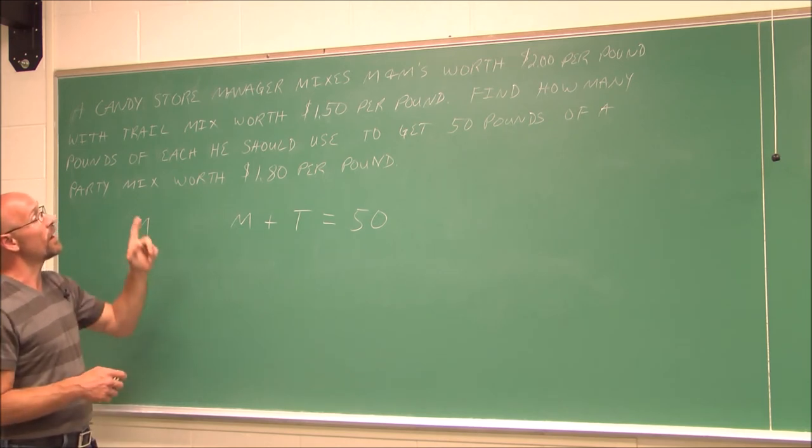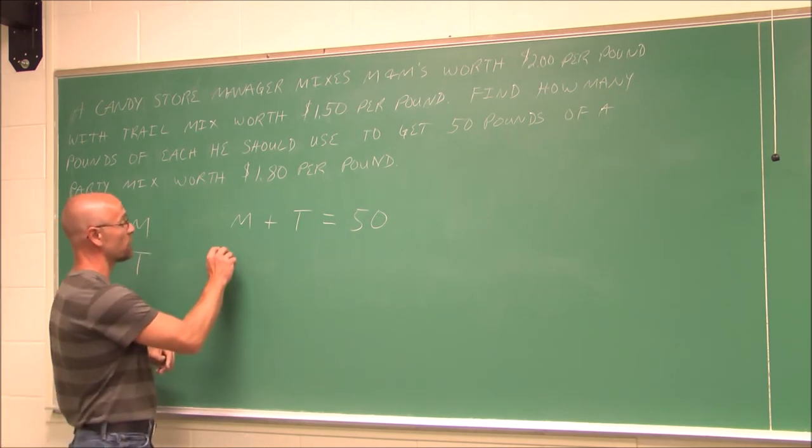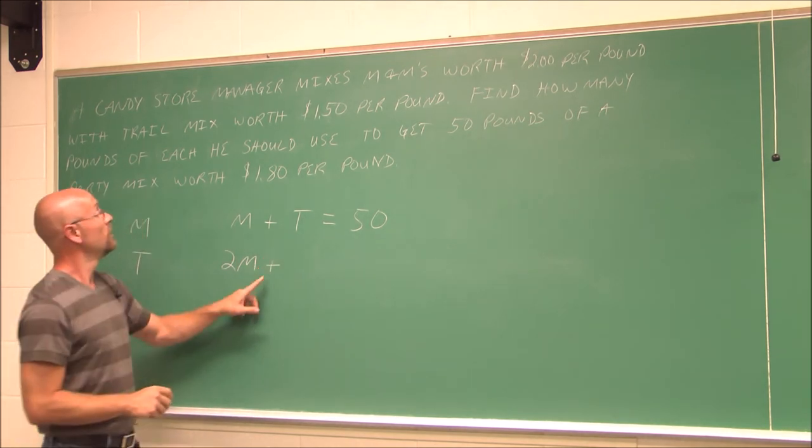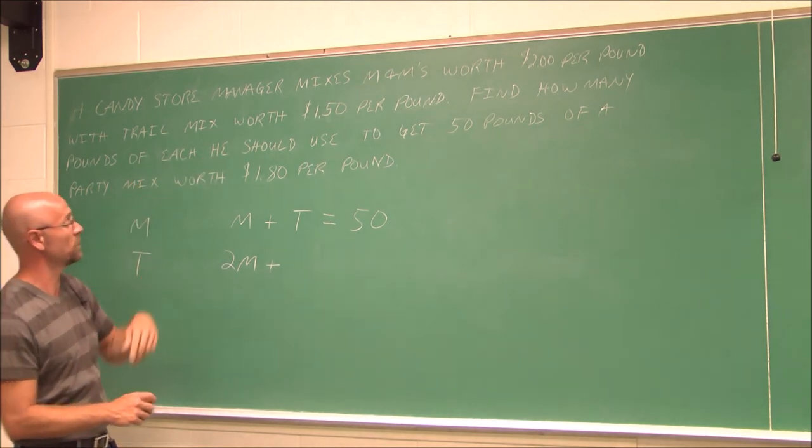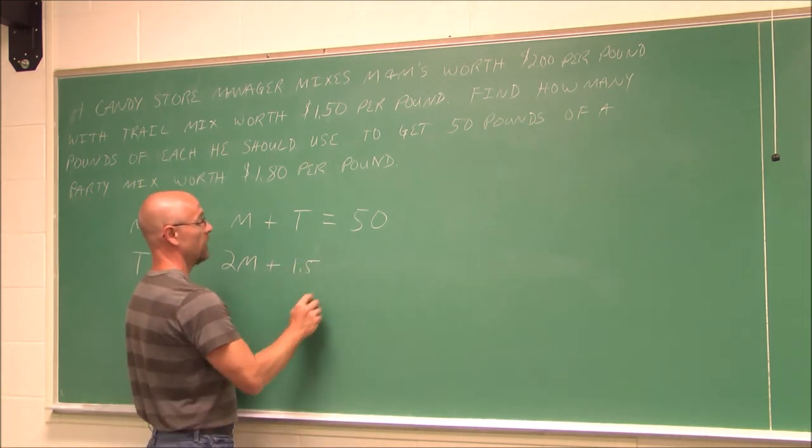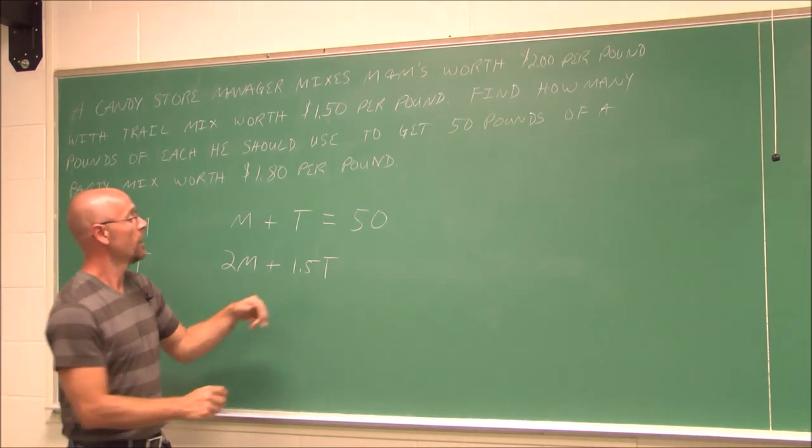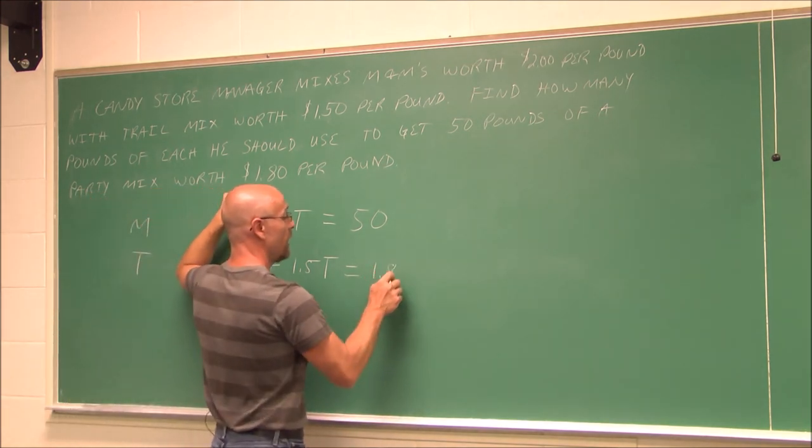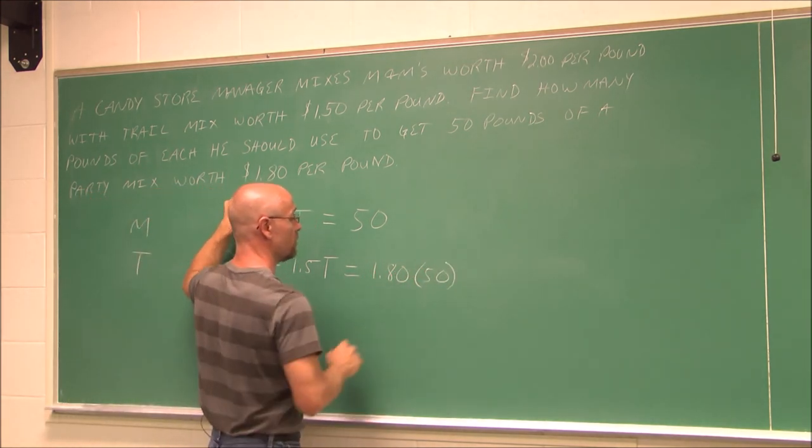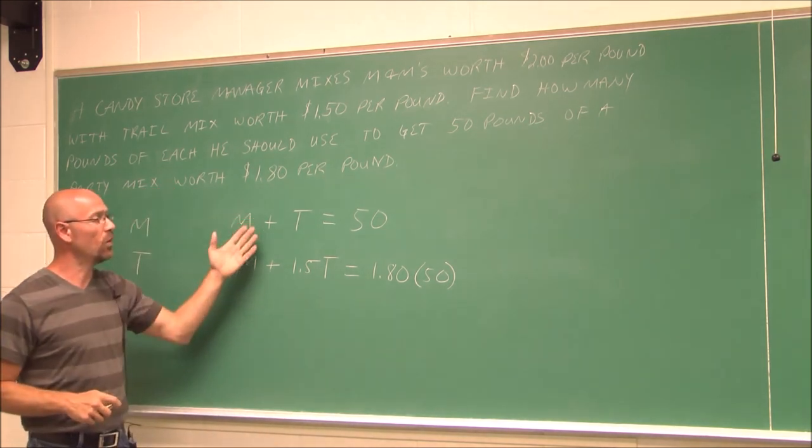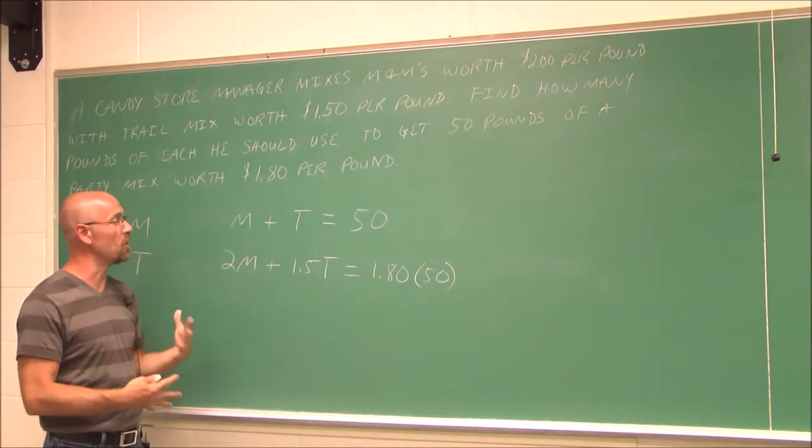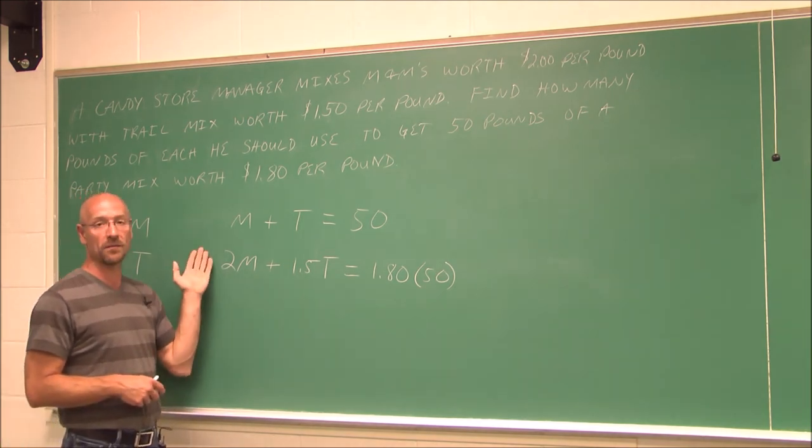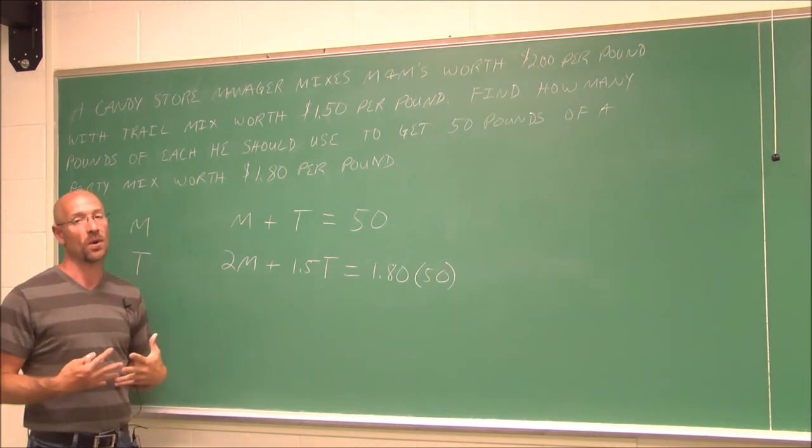Now we look at the value. Well, our M&Ms are worth $2 a pound. Well, $2 the value times the amount is the total that we'll have there. Plus we have the trail mix, which is $1.50 per pound, will give us a 50 pound worth $1.80 per pound. So $1.80 times 50 pounds. So once you do many of these and you do the homework and you get through the practice, it's not a spectator sport. You'll be able to set these up in a relatively short period of time through practice. Keep practicing.